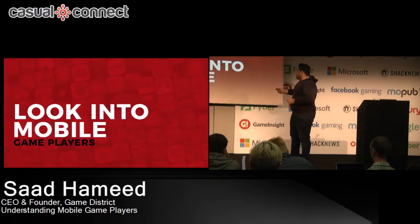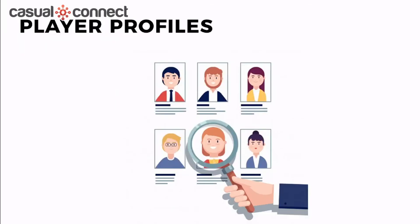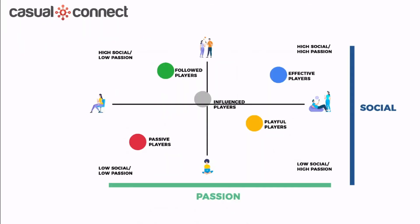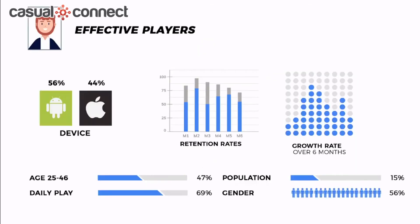Looking into mobile game players, we've segmented them into two product positioning axes: social and passion. We believe mobile game users are either socially very high or very low, and either highly passionate about games or not. From this, we've segmented five player types around the world.